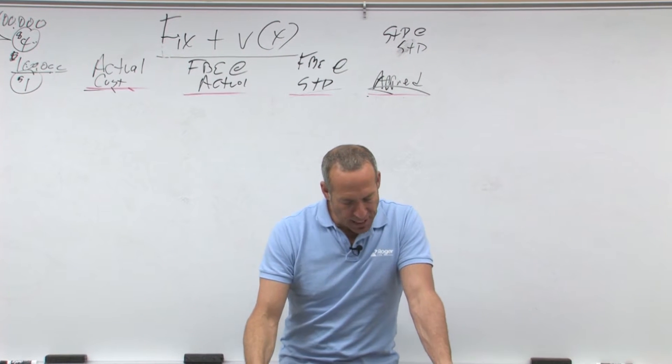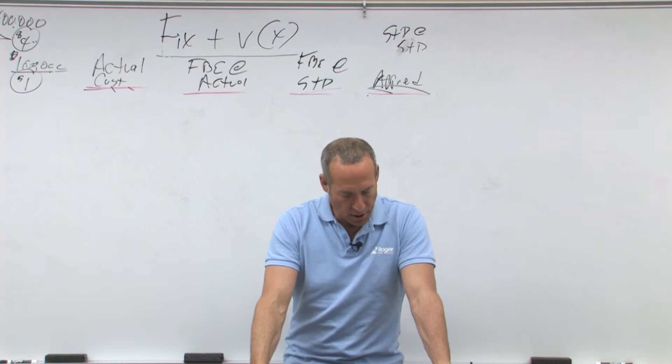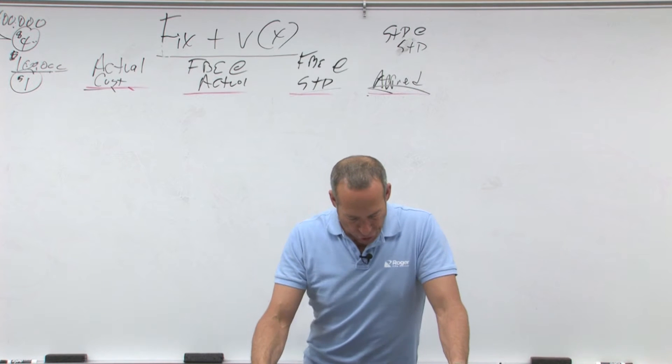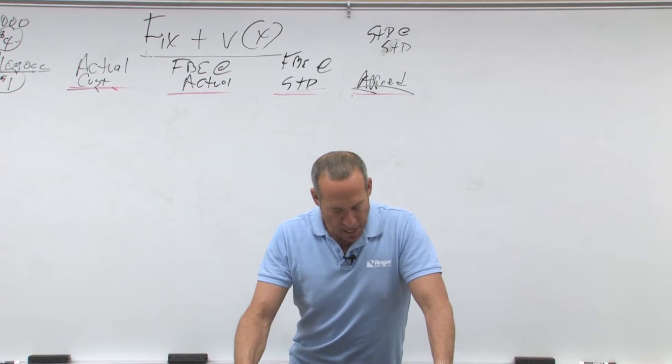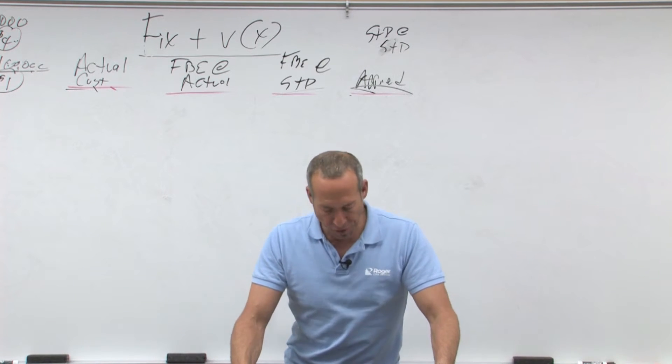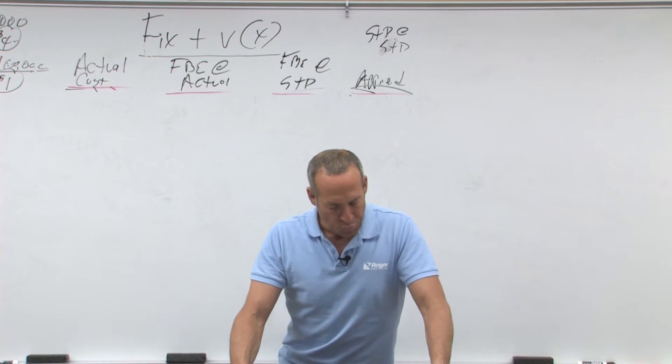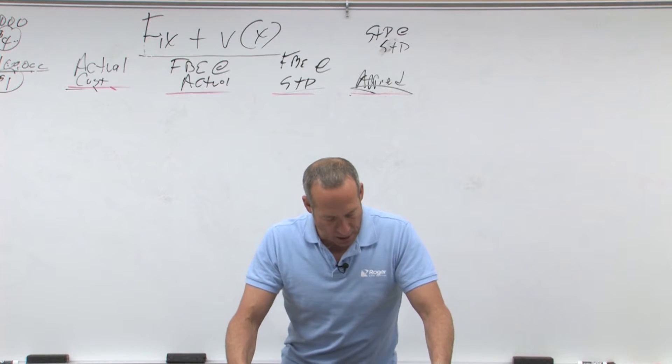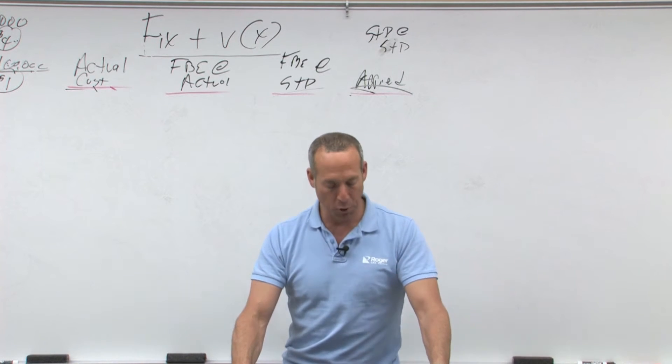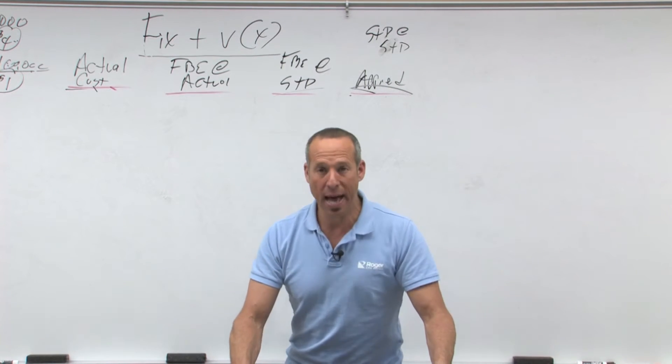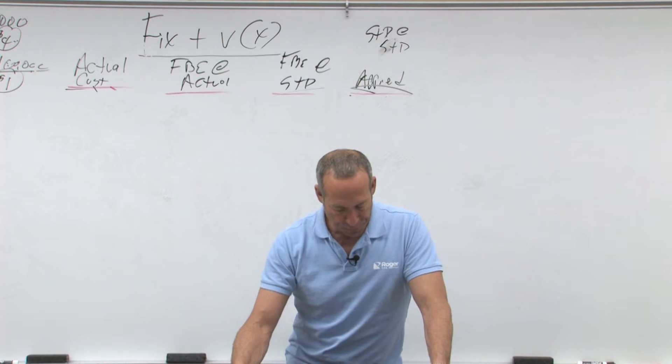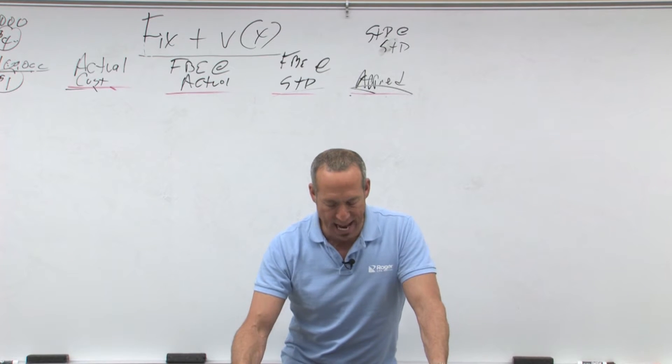It says the following information pertains to ROCO's X3 manufacturing operations. We have standard direct manufacturing labor hours per unit, two. Actual direct manufacturing labor hours, 10,005, so that's actual hours. Number of units produced, 5,000, that's actual. Standard variable overhead per standard direct manufacturing labor hour, so our base is labor hours, and that's three bucks an hour. Actual variable overhead is 28,000 bucks.